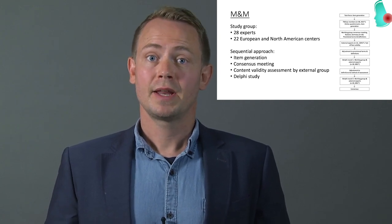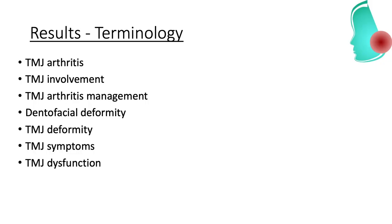The seven operational terms are: TMJ arthritis, TMJ involvement, TMJ arthritis management, dental facial deformity, TMJ deformity, TMJ symptoms, and TMJ dysfunction. A specific definition was linked to each of the seven terms.